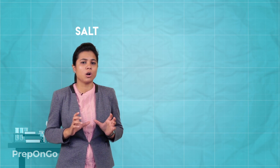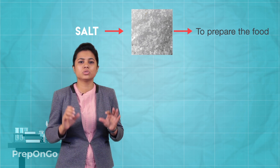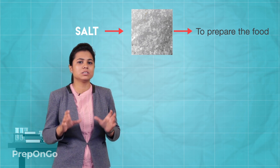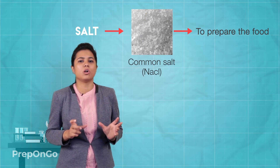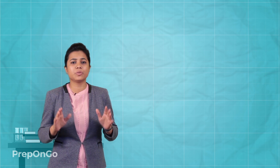Most of us must be imagining the salt word as white crystals which we use to prepare food. These white crystals are common salt, or what we call sodium chloride. Limiting our understanding to sodium chloride only as a salt is wrong — there are various salts which we use in our daily life.